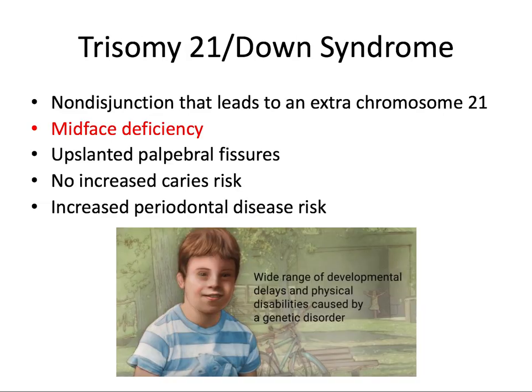Trisomy 21, or Down syndrome, is one of the most common genetic diseases. It's caused by non-disjunction which leads to an extra chromosome number 21. This syndrome is characterized by midface deficiency — most important to know for the board exam — and up-slanted palpebral fissures, so the eyes are pointed upwards. This is the complete opposite of Treacher-Collins syndrome, which has mandibular deficiency and down-slanted eyes. These patients have no increased caries risk but do have an increased periodontal disease risk.